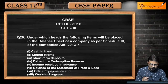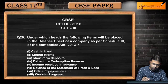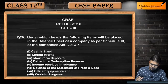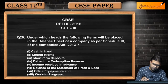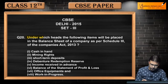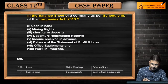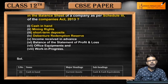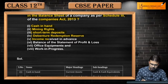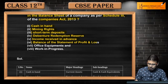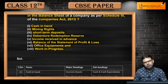Question number 20: Under which head will the following items be placed in the balance sheet of Schedule III companies under the Companies Act 2013? The items are: cash in hand, mining rights, short-term deposits, debenture redemption reserve (DRR), income received in advance, balance in statement of profit and loss, office equipment, and work in progress. There are 8 items for 4 marks.